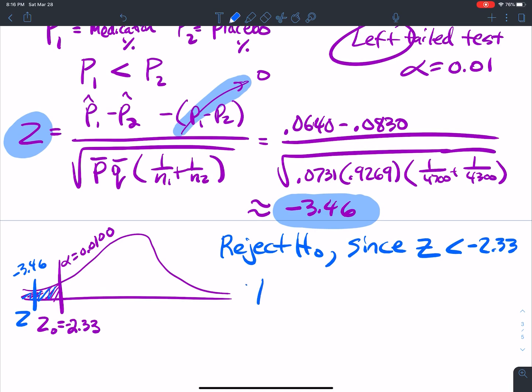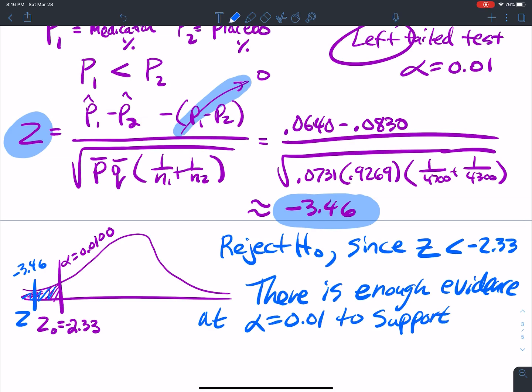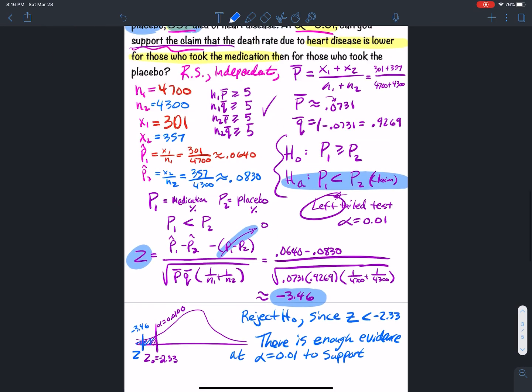So that means there is enough evidence at alpha equal to 0.01 to support. Why is it support? Because the Ha is the claim.